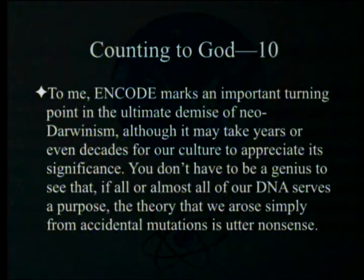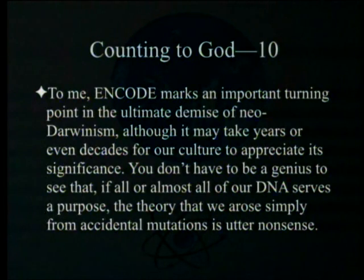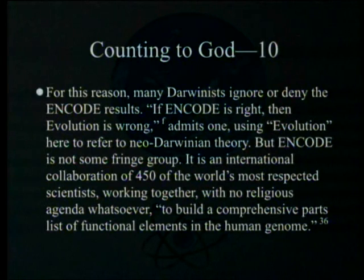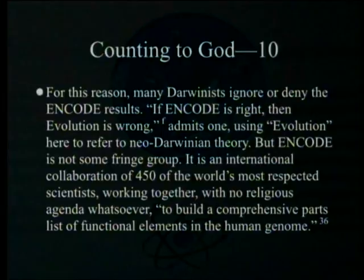To me, ENCODE marks an important turning point in the ultimate demise of neo-Darwinism, though it may take years or decades for our culture to appreciate its significance. If all or almost all our DNA serves a purpose, the theory that we arose simply from accidental mutations is utter nonsense. Many Darwinists ignore or deny the ENCODE results. As one admits: 'If ENCODE is right, then evolution is wrong' — that's Dan Grauer, who is dead set against ENCODE and is frustrated that they released 32 papers simultaneously, making them harder to rebut one by one.